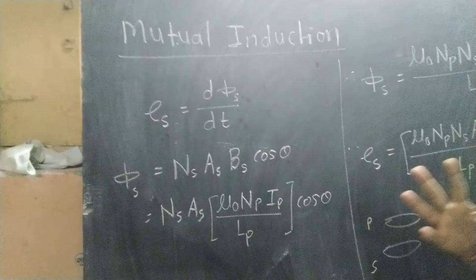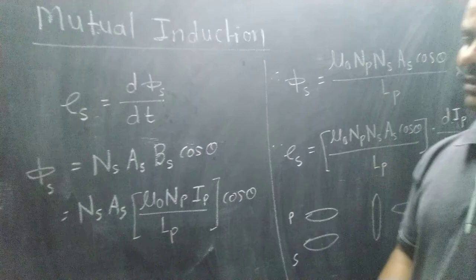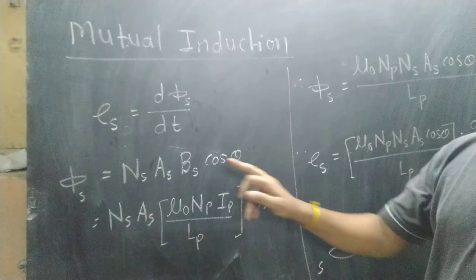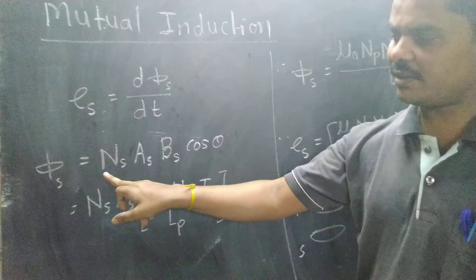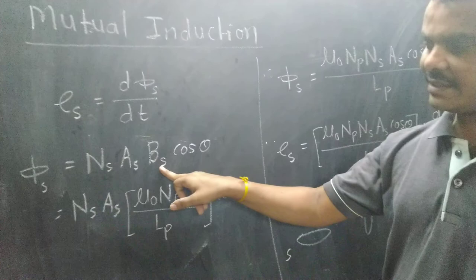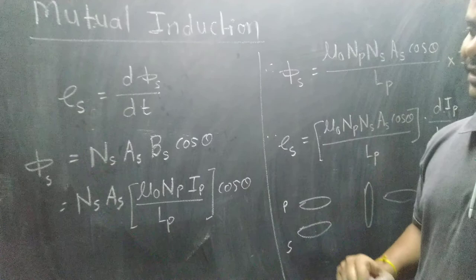The flux is given by the magnetic field into area. The product is called flux. It is the magnetic field inside the secondary coil multiplied by the area, into cos theta. Cos theta relates to the magnetic field direction.